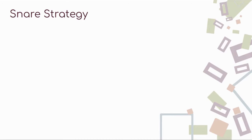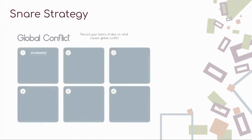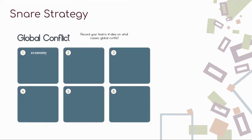Here is an example of a snare strategy in action. A student captured their number one idea on what causes global conflict. In this case, they chose economy.